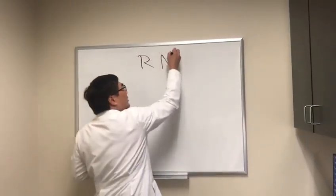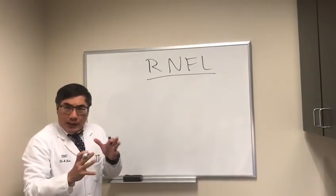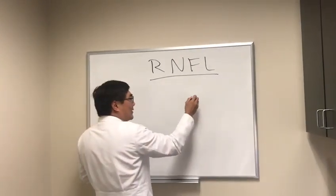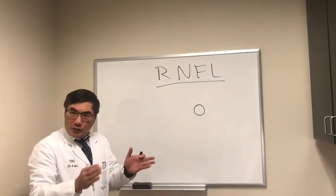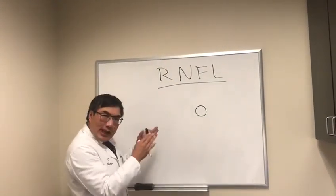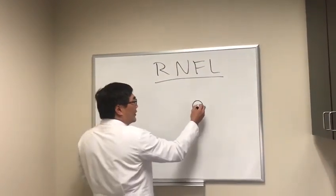Today we're going to talk about the retinal nerve fiber layer. The RNFL allows us to actually see the central nervous system when we're looking in the eye. It really is one of our superpowers that we can look in the eye and see the nerve fiber layer.